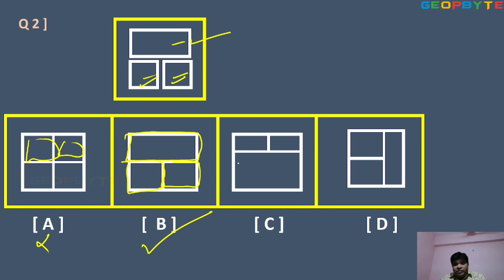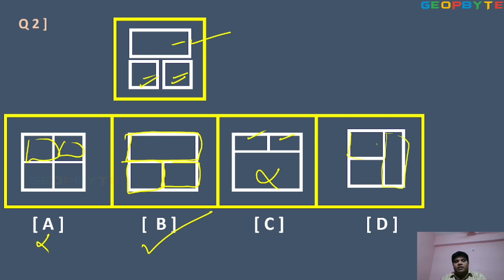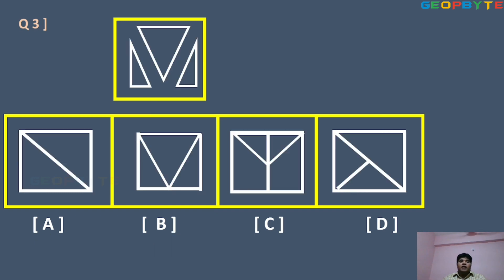In option C, there are two boxes and one big box — the number of boxes is okay, but their length and width are not correct, so option C is wrong. In option D, the square box type is okay but the rectangle's width and length are not satisfied, so option D is also wrong. Sometimes length and width are also important. Option B is the right answer.